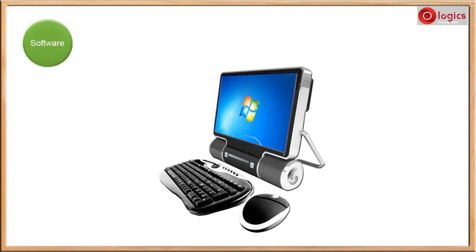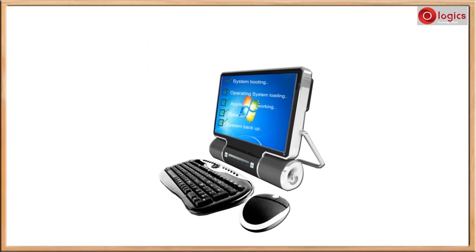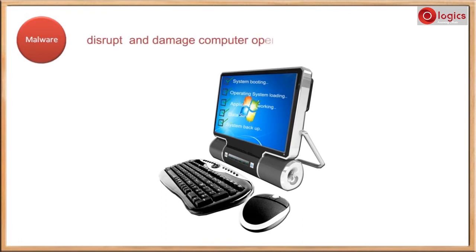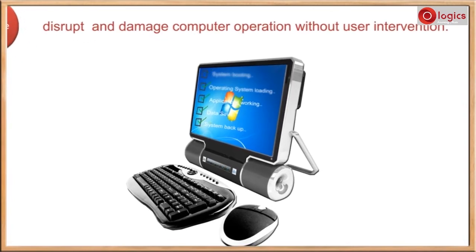Software makes computer operations work as per user instructions, such as system booting, operating system loading, applications running over the operating system, and saving data over system backup. Malware is one kind of software application which disrupts and damages computer operations without user intervention — it spoils the computer activity.